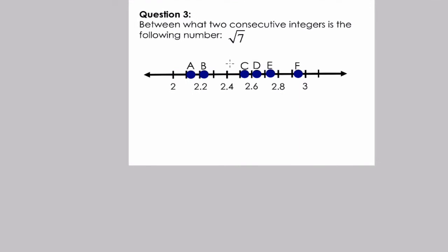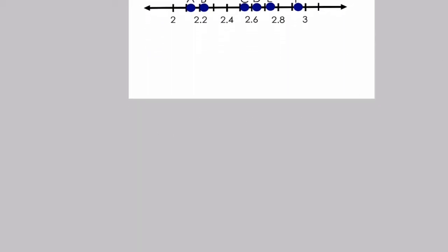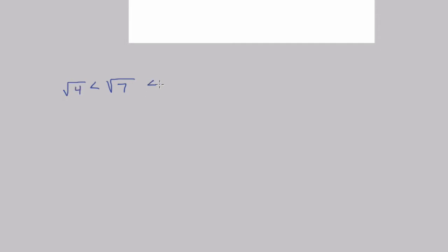In this problem we're finding between which two consecutive integers the square root of seven falls, and choosing which labeled point on the number line best represents it. The square root of seven is larger than the square root of four, which is two, and less than the square root of nine, which is three. Seven is only two away from nine but three away from four, so the square root of seven is closer to three — it's a decimal between two and three, closer to three.